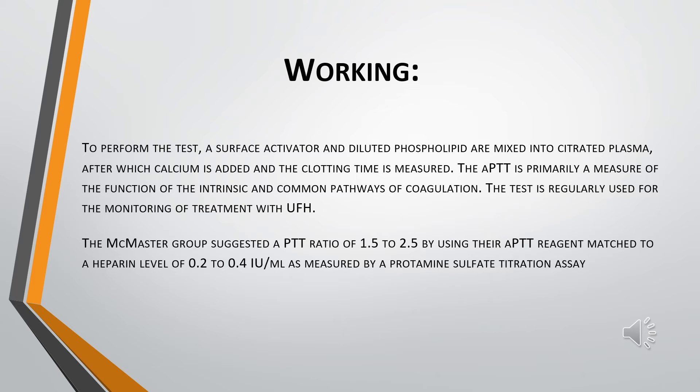The working of the APTT involves taking a blood sample from the patient or animal being tested for the anticoagulant drug. This citrate plasma is mixed with a surface activator and diluted phospholipid, then calcium is added and the clotting time is measured.